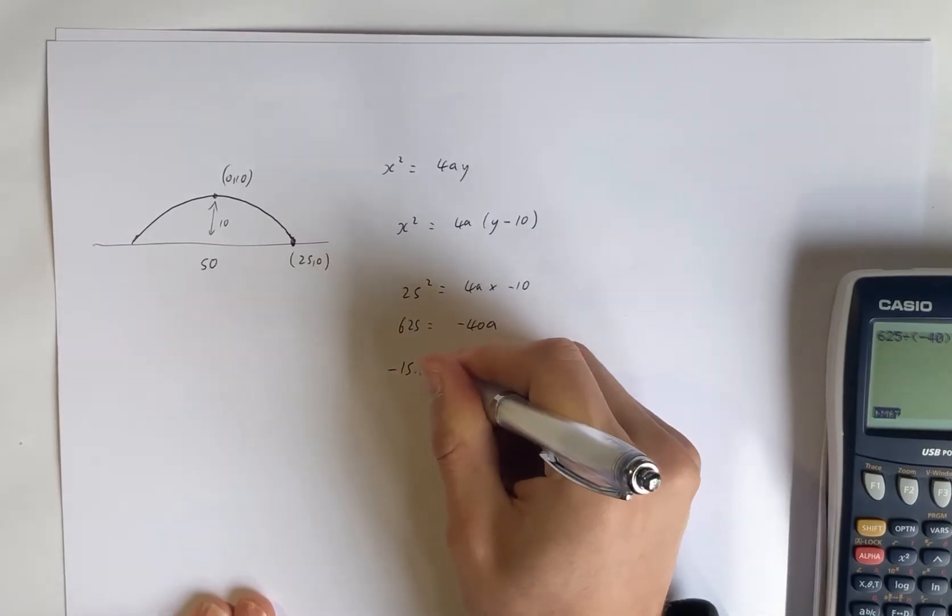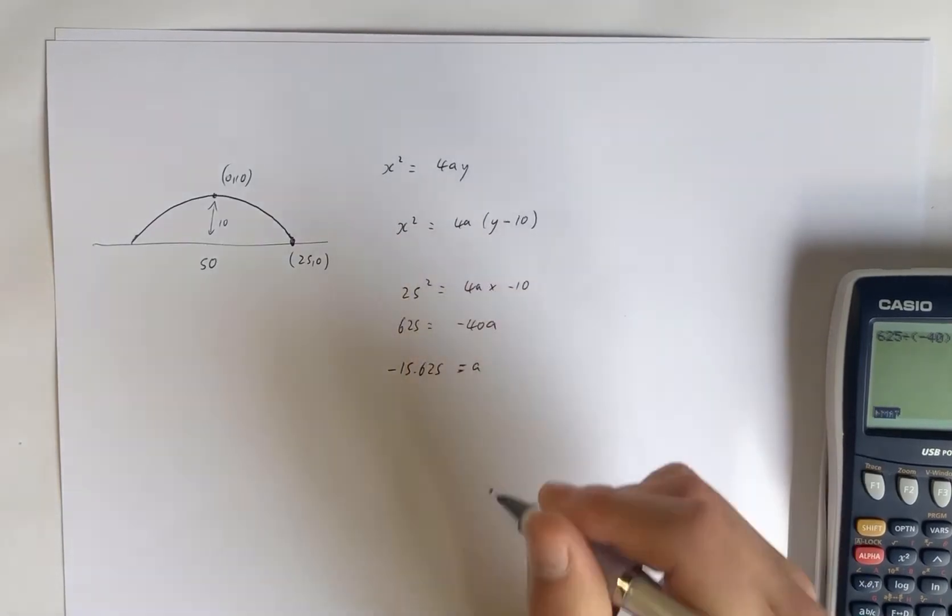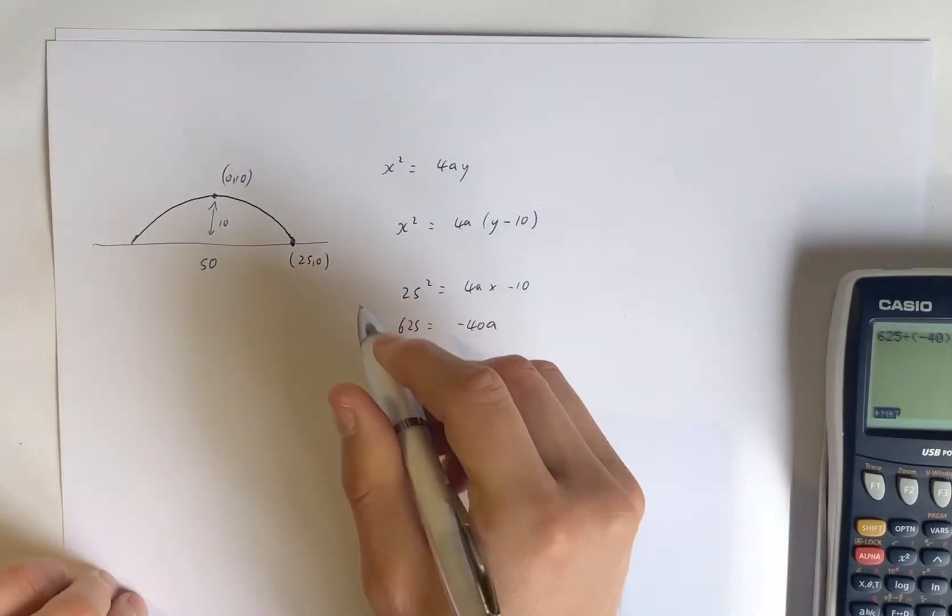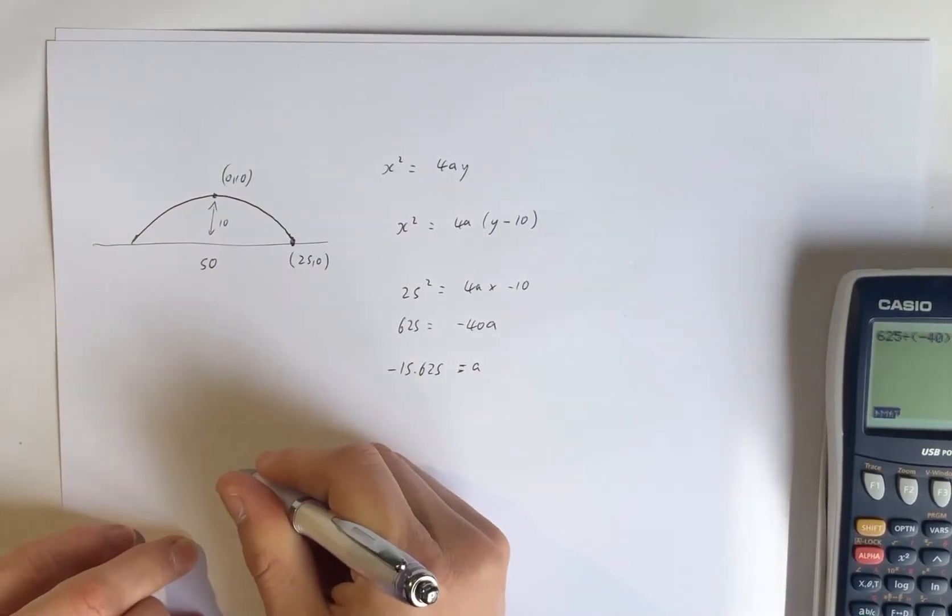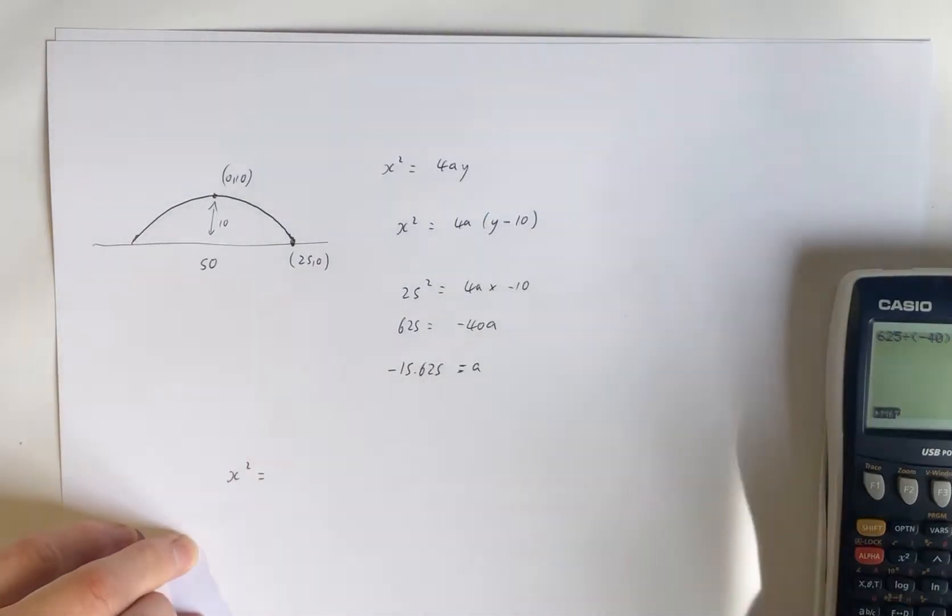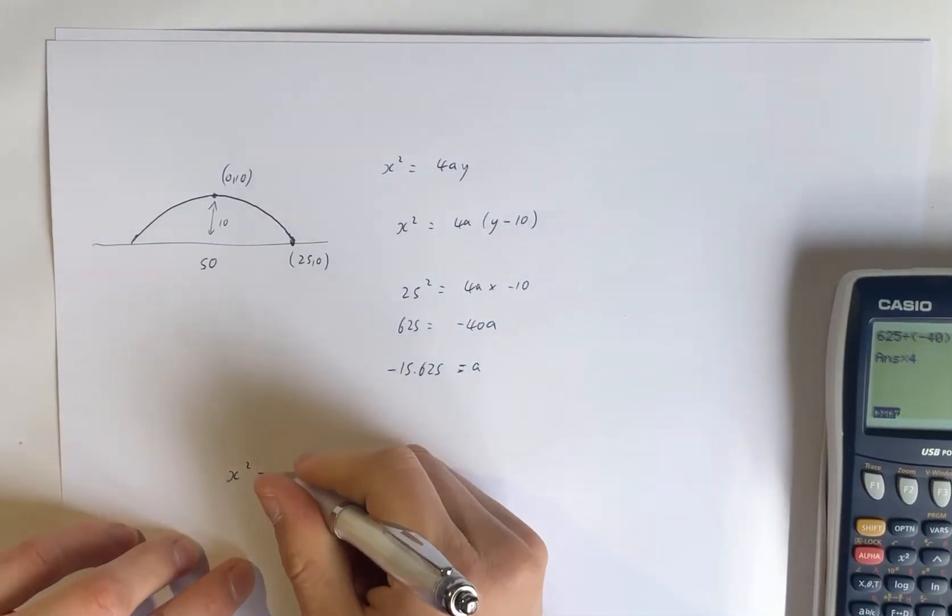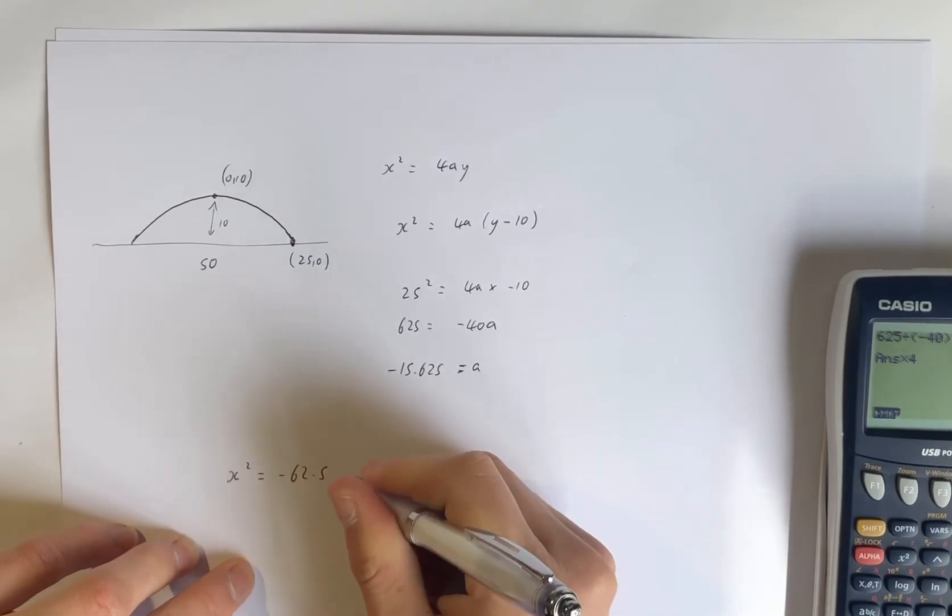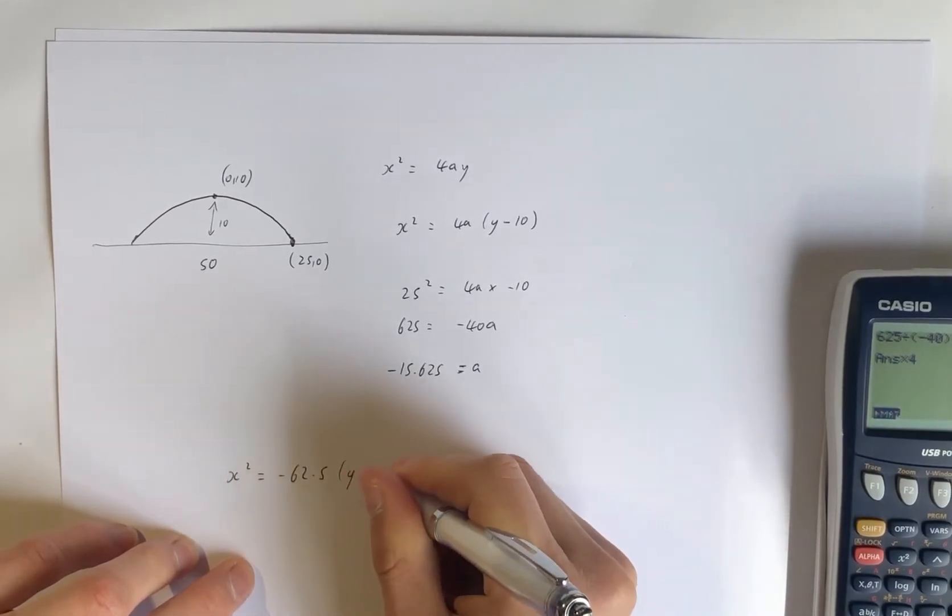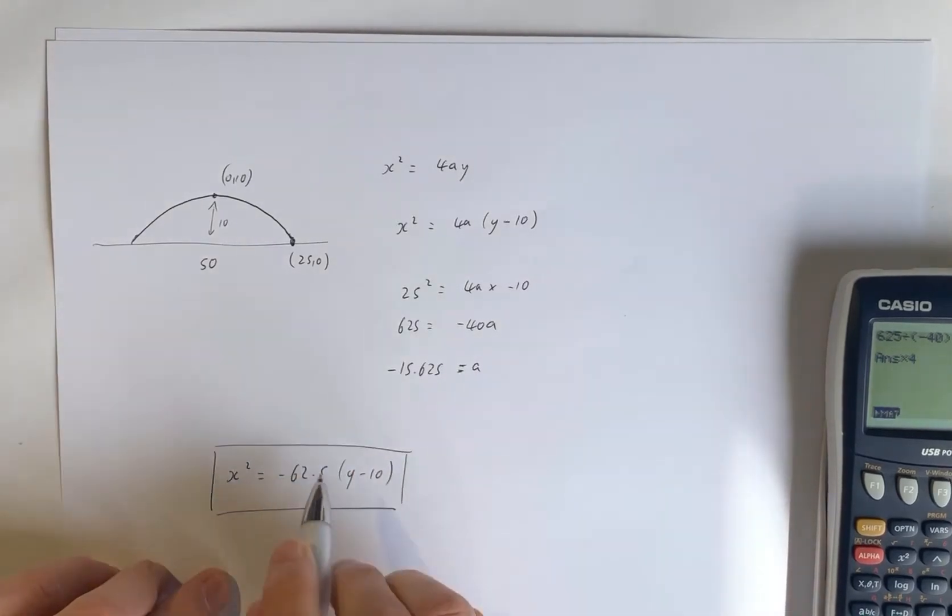So 625 divided by negative 40. Negative 15.625. And that gives us A. So if we had a parabolic roof, the equation would be x squared equals negative 62.5(Y minus 10). And there you have a parabolic model of the roof or ceiling.